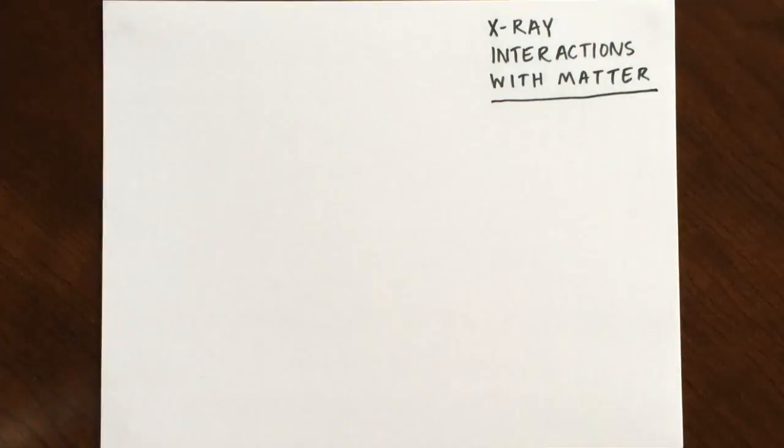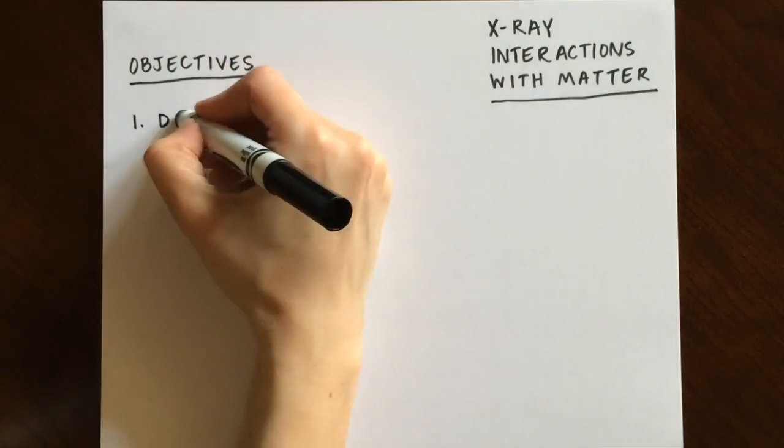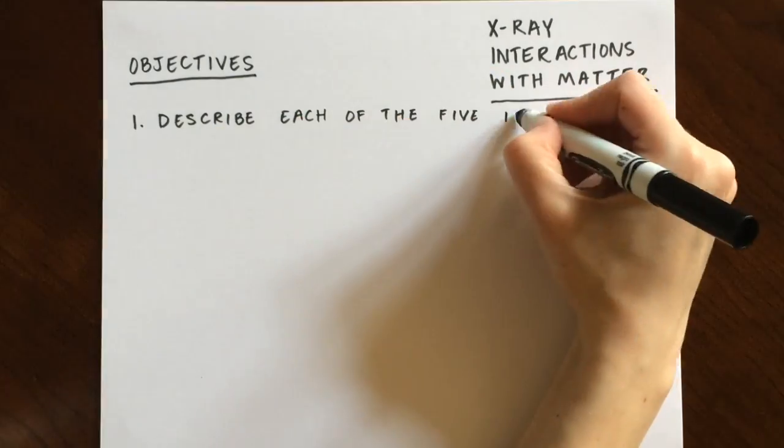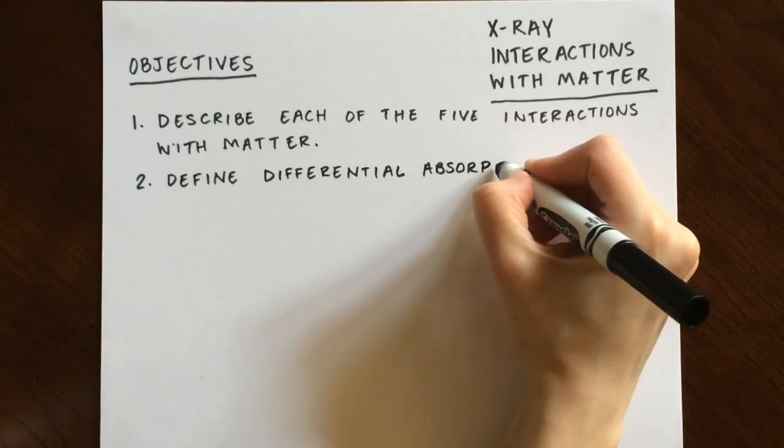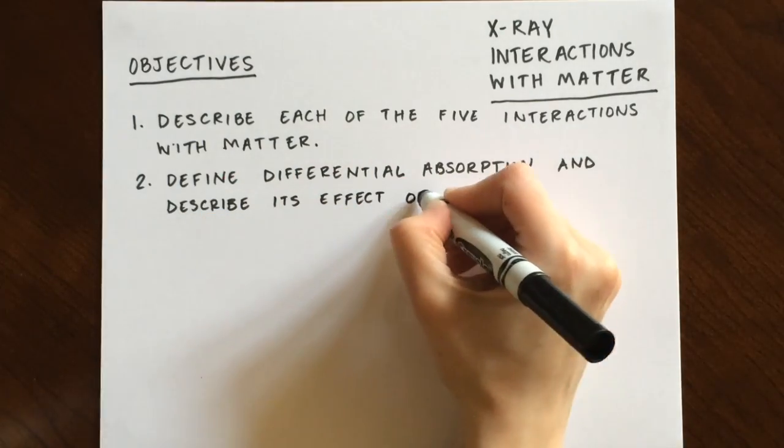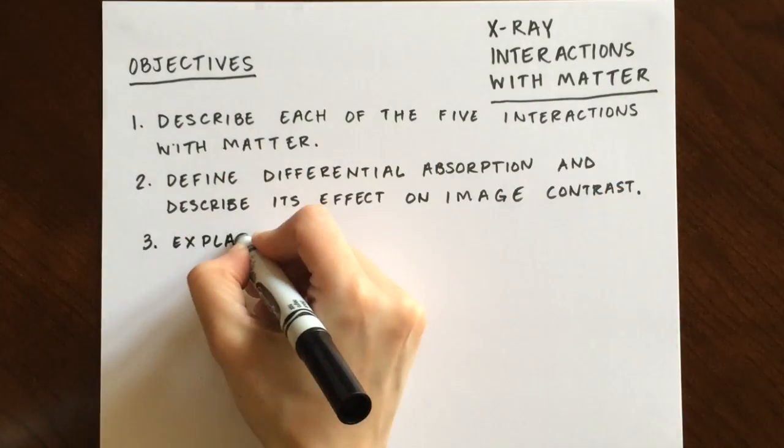In this video we will look at five types of interactions that x-rays have with matter. By the end of this unit you will be able to describe each of the five interactions, define differential absorption and describe its effect on image contrast.